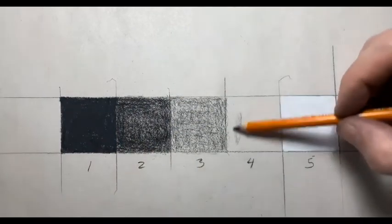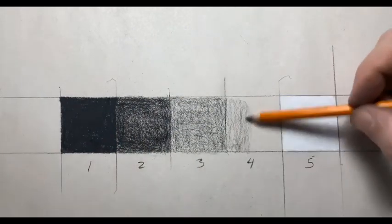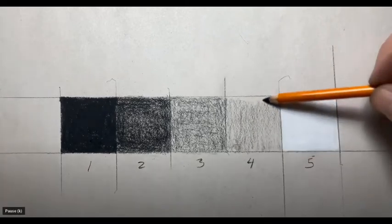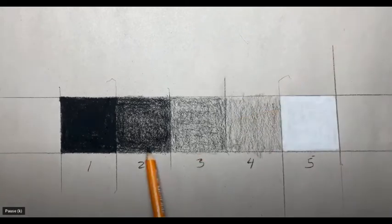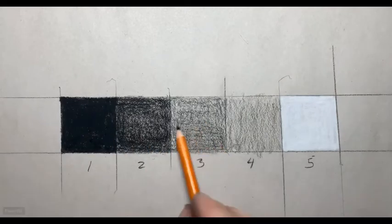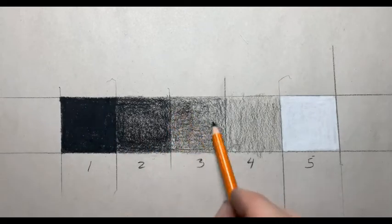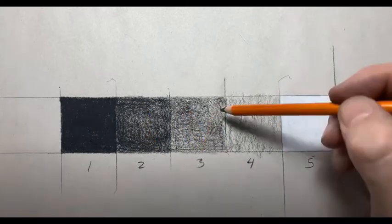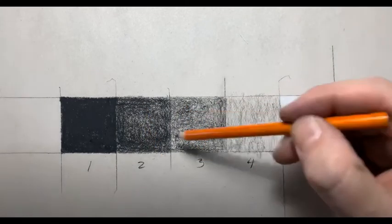With both of these, never smear or use a blending stump to smear the charcoal. Allow the paper to show through so there will always be a little bit of texture of the paper visible for both of these drawings.